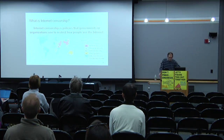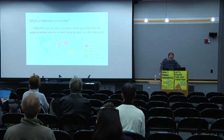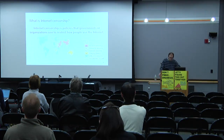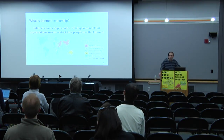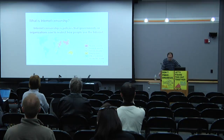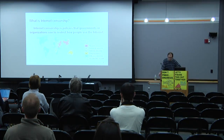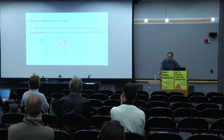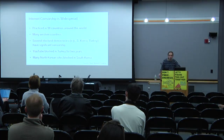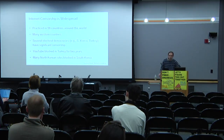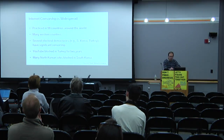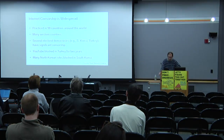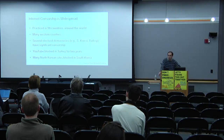These statistics are from a group called the Open Net Initiative. There are other groups that issue reports of this nature — Freedom House, Reporters Without Borders — a whole bunch of civil society organizations that release this kind of information. According to those reports, censorship is practiced in at least 59 countries around the world. It's probably a lot more than that, and I think we should probably be updating these numbers based on our recent measurements.